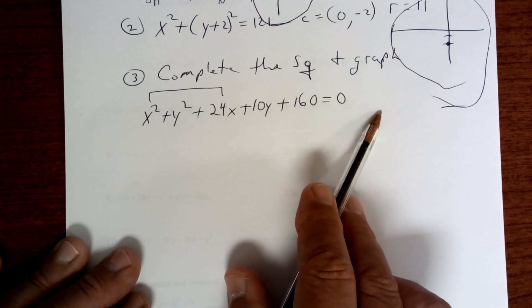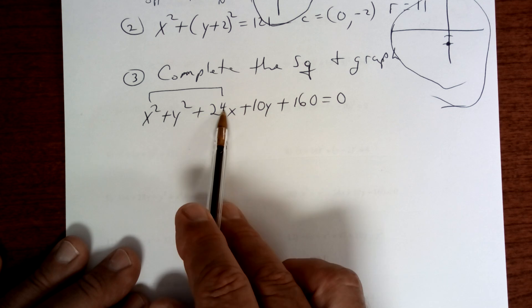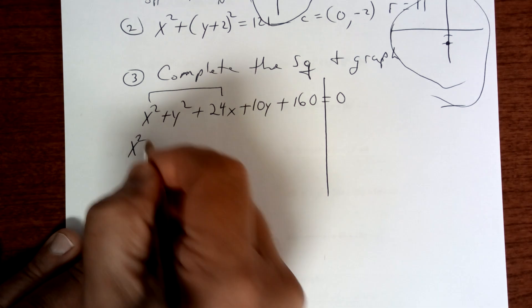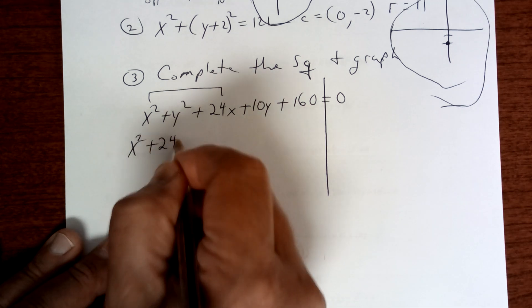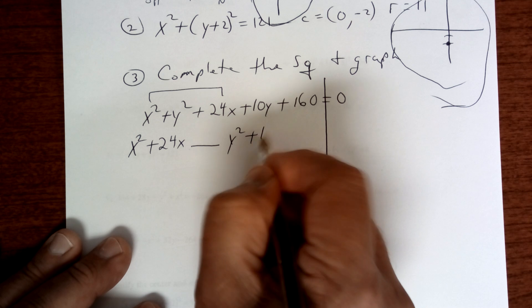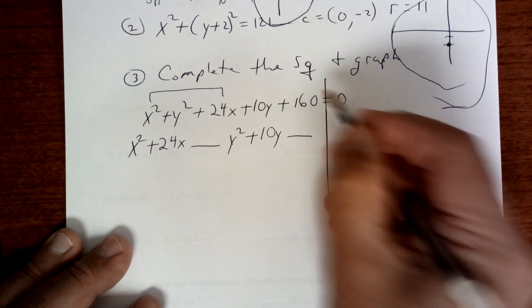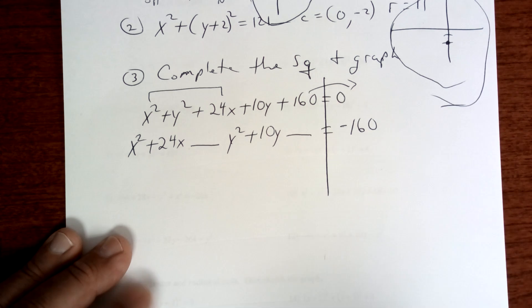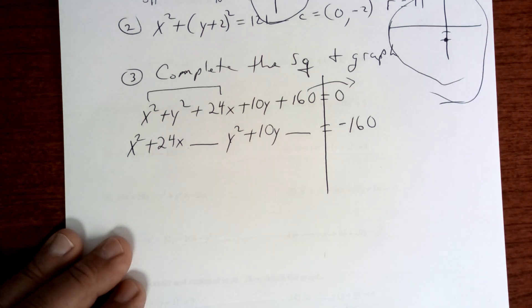I said you got to organize your x's. Now if you got x's over here, then you've got to bring them to the other side, and remember the sign changes when you cross that line. So draw that line. So you're going to get x² + 24x, a space, y² + 10y, a space. You're going to move the 160 over, which changes to a negative.